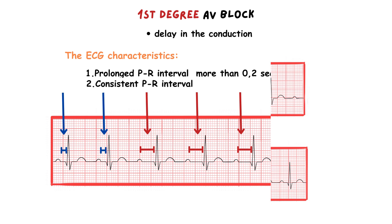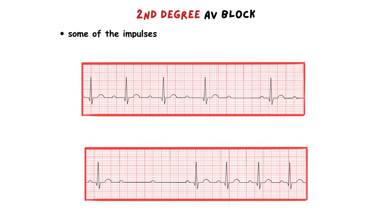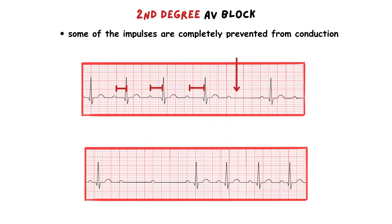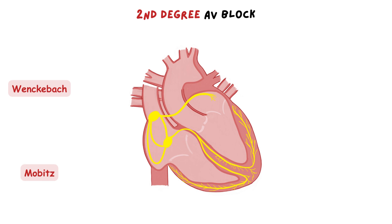With second degree AV block, some of the impulses coming from the atria are completely prevented from conduction to the ventricles. There are two types of second degree AV block: one with progressively increasing duration of conduction until complete block occurs, and the other with completely prevented conductions of the impulses before a conduction occurs. They are called Wenckebach and Mobitz. Wenckebach block occurs directly in the AV node, while Mobitz block is situated below the AV node in the His bundle.